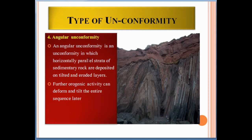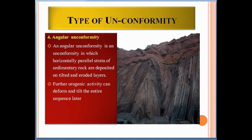The fourth type is angular unconformity. An angular unconformity is an unconformity in which horizontally parallel strata of sedimentary rocks are deposited on tilted and eroded layers. Here we can see the parallel sedimentary rocks above and the tilted or angular rock strata below. Further orogenic activity can deform and tilt the entire sequence of layers.